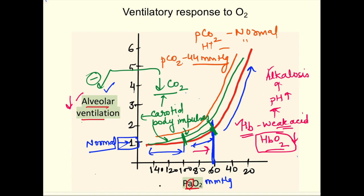Summary of ventilatory response to oxygen: first, alveolar ventilation increases steeply only after pO2 falls below 60 mmHg. Second, this threshold is dependent on pCO2 — if pCO2 is elevated, the curve shifts. Third, carotid body impulses begin rising earlier than alveolar ventilation reflects, because the resulting fall in CO2 and slight rise in pH due to increased deoxyhemoglobin both counteract the rise in ventilation.